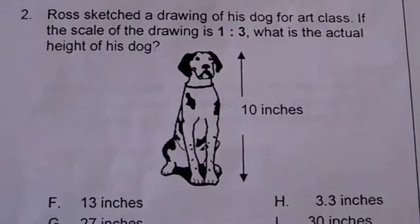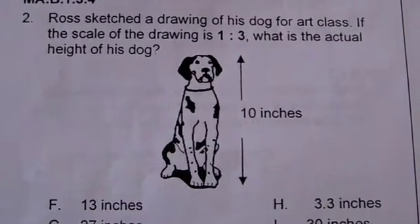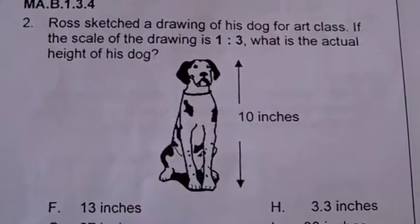Ross sketched a drawing of his dog for art class. If the scale of the drawing is 1 to 3, what is the actual height of his dog?